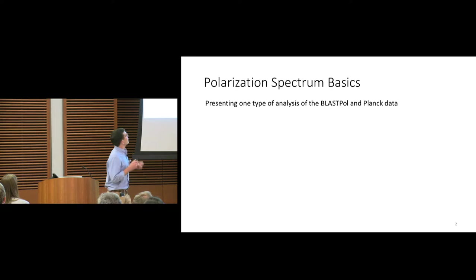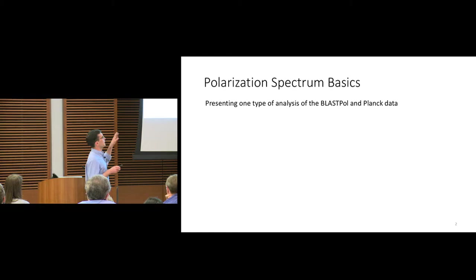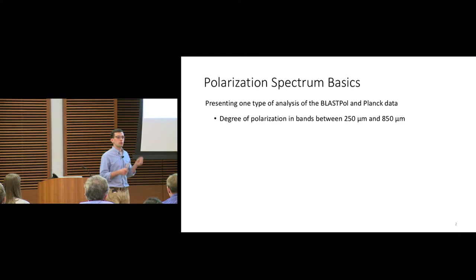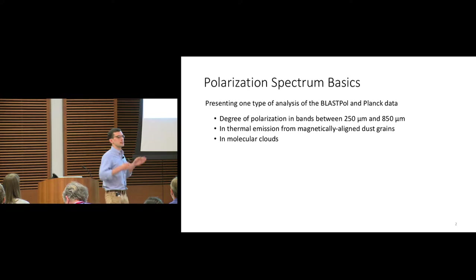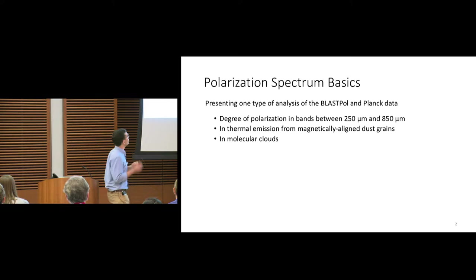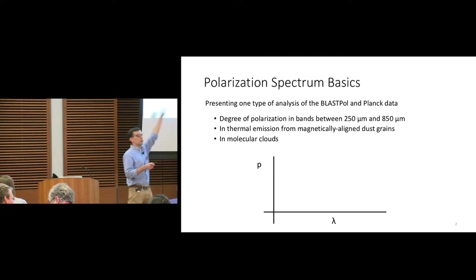So what are we talking about when we talk about the submillimeter polarization spectrum? This is one analysis that we're doing with the BlastPol data jointly with the Planck data. What we're doing here is looking at the degree of polarization in bands from 250 up to 850 microns. This is thermal emission from magnetically aligned dust grains, specifically in molecular clouds.